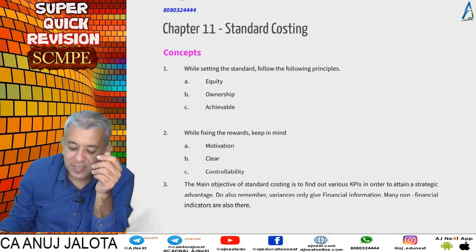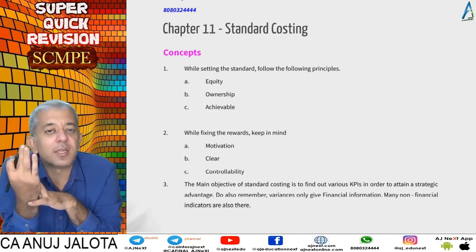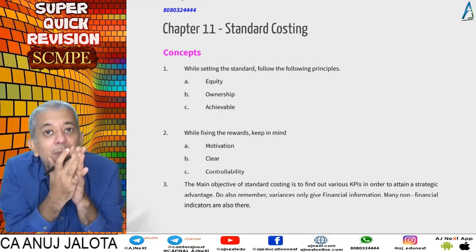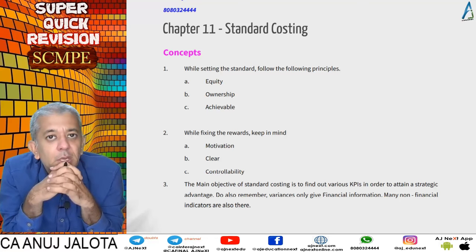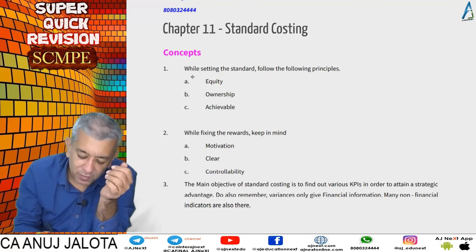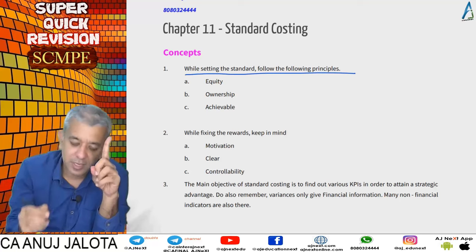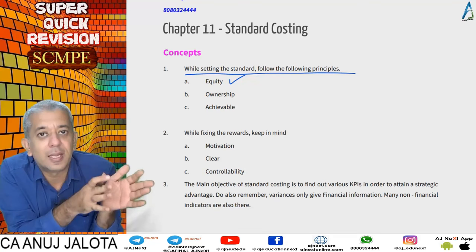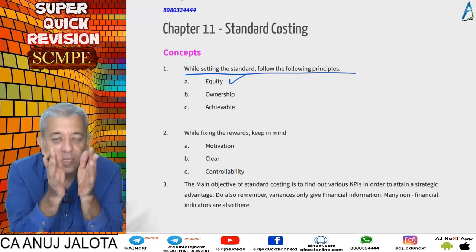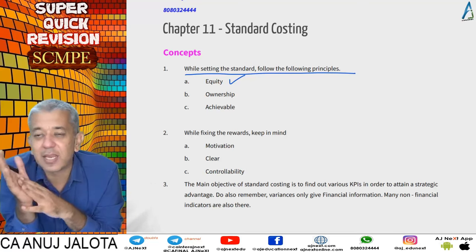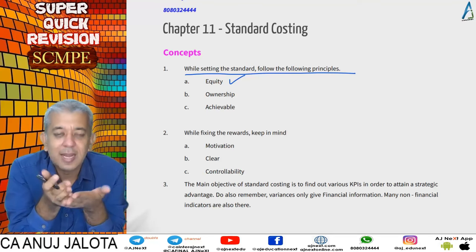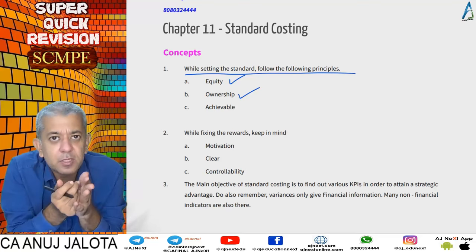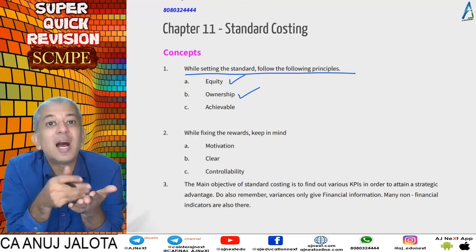Now wherever standards are being set, there are three criteria they should meet. These three criteria were made by Fitzgerald and Moon in the Building Block Model. The first principle is equity — standards should be equally challenging for all different departments. It should not be that for one department it's very easy and for another it's very tough.